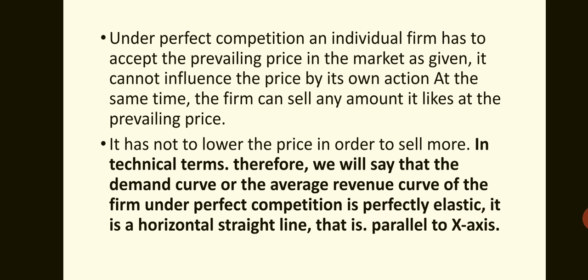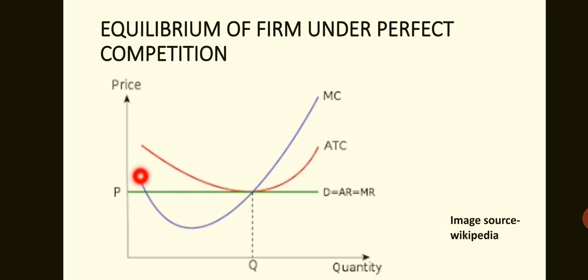Since the firm must accept the constant market price, the price curve is a horizontal straight line. The price is constant because the market price must be accepted — it cannot be raised or lowered. That is why the price curve is a horizontal straight line, and the demand curve is also a straight line, because when price is constant, demand also remains constant.